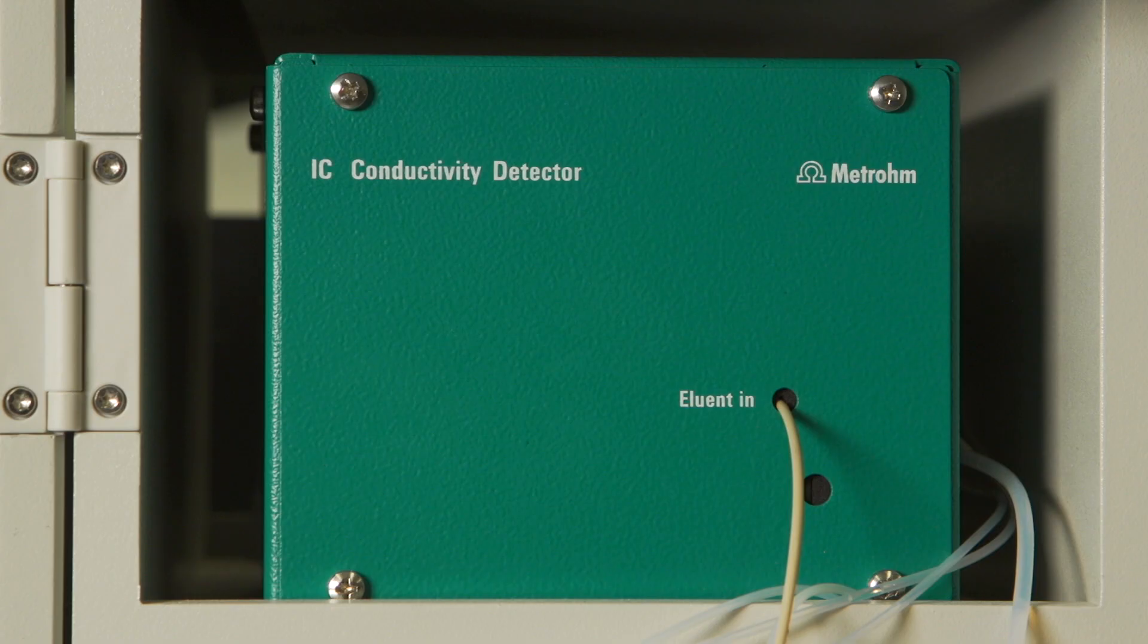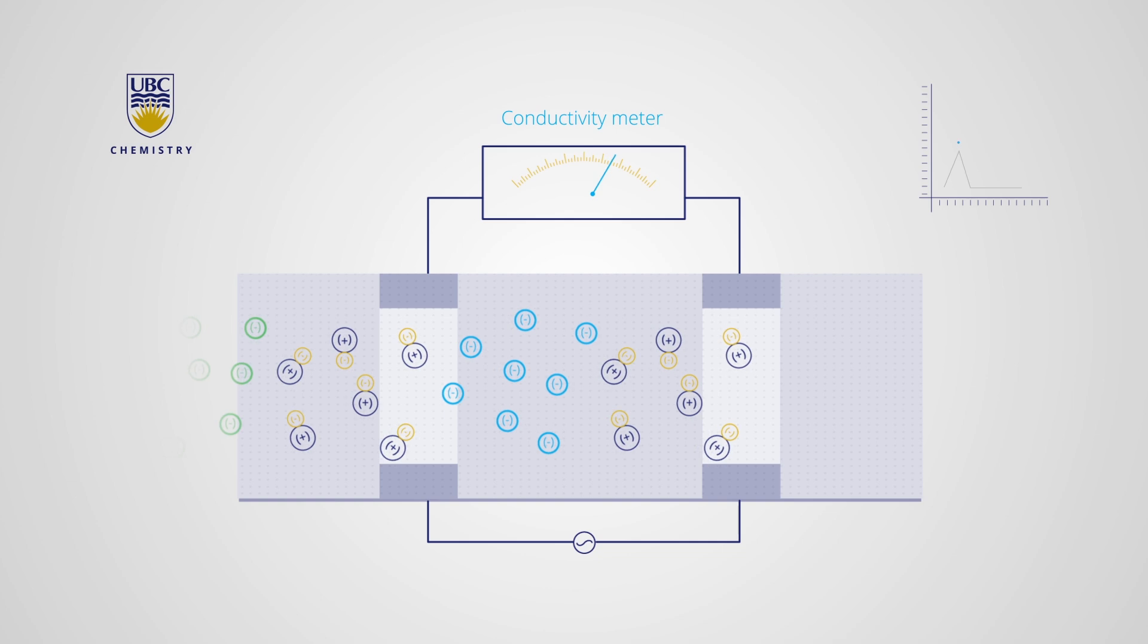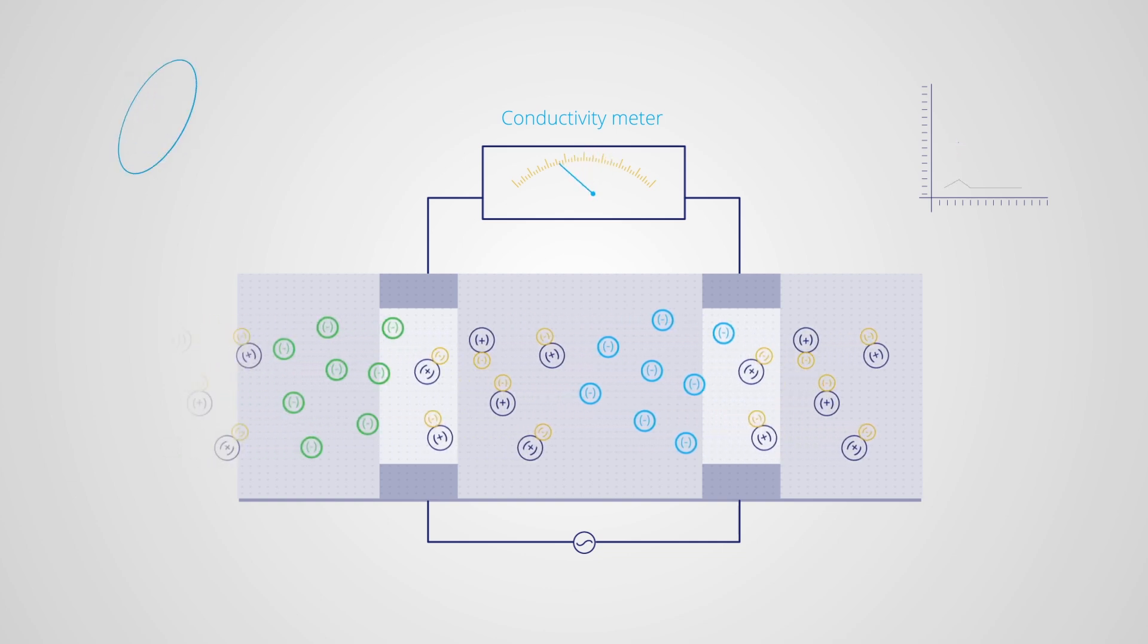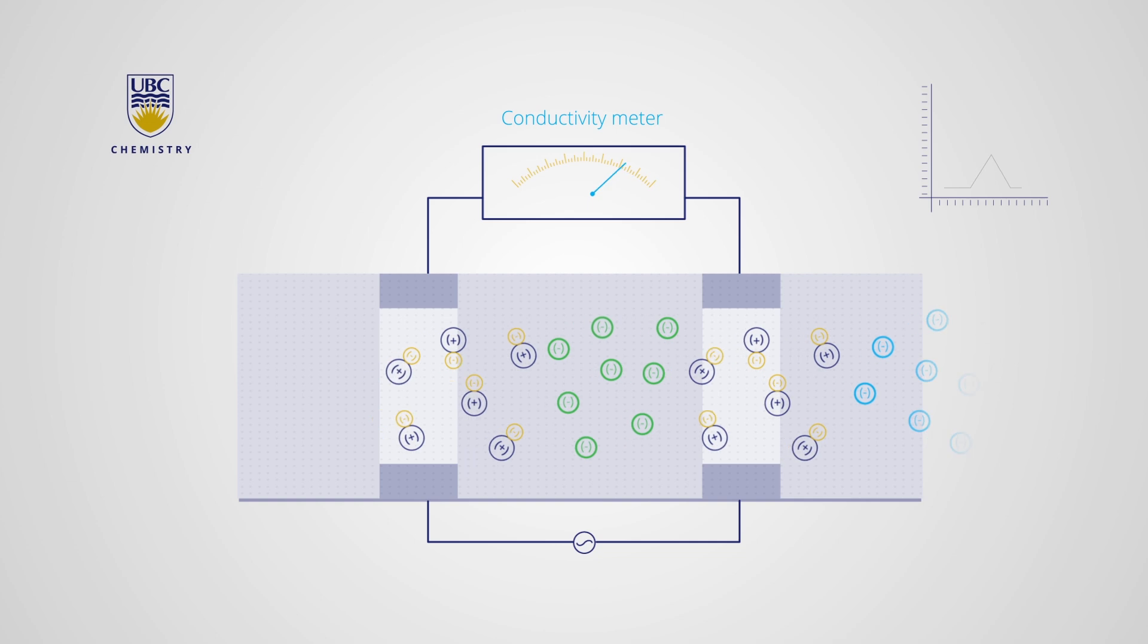The sample coming out of the suppressor reaches the conductivity detector. The ions enter a flow cell containing two electrodes, which have a potential applied across them. As the ions pass through, a current flows. The current is proportional to the conductivity, which is related to the ion concentration.